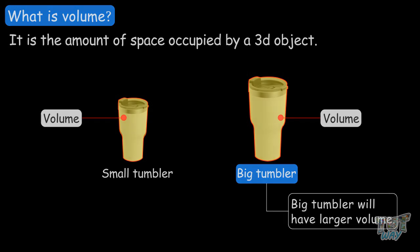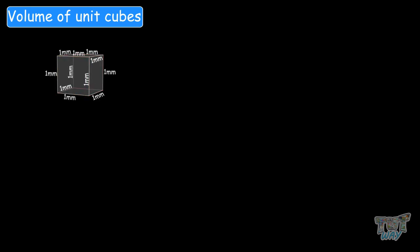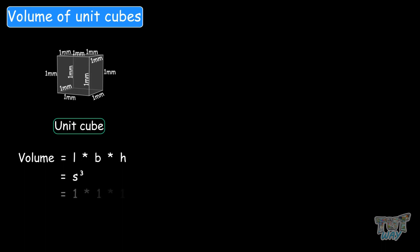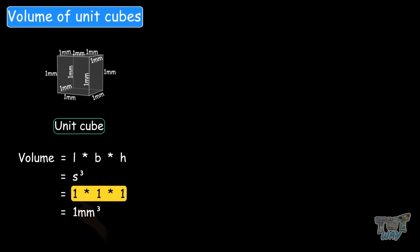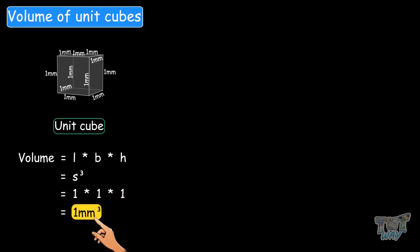For learning how to find the volume, we start with the cube whose every side is 1 mm, and it is called a unit cube. Its volume is length times breadth times height, and since length, breadth, and height are all the same in a cube, it's side cubed. So it is 1 times 1 times 1, which equals 1 mm cubed.